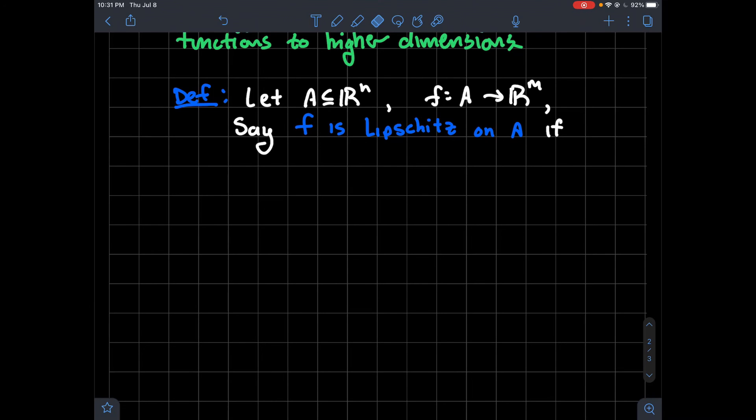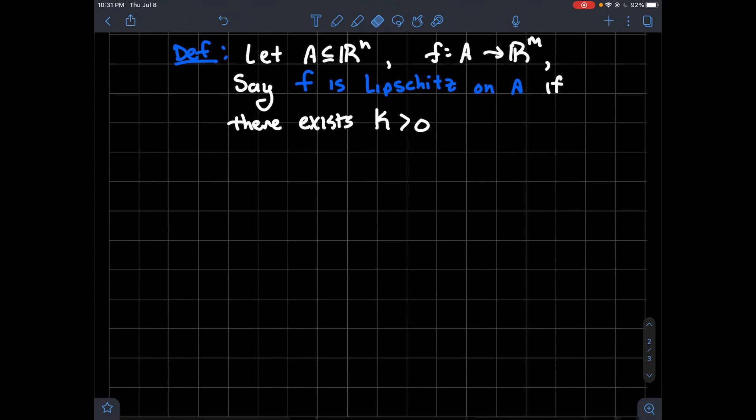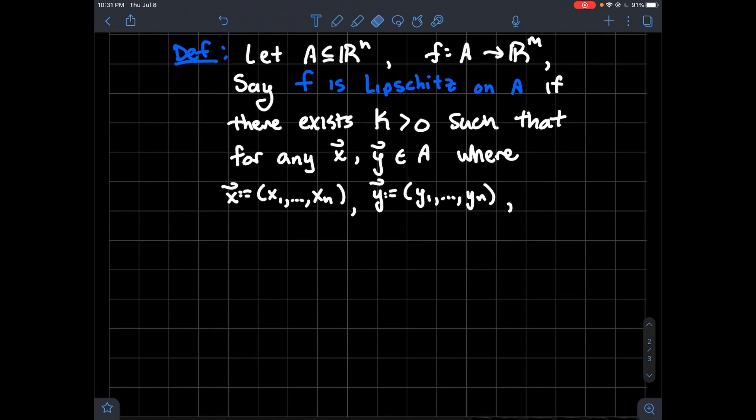We're going to say that f is Lipschitz on A if the following happens. There exists a constant k that's positive. That looks familiar. Such that if I take any two vectors x and y in A, that's supposed to be my attempt at a hat on an x to indicate it's a vector. The coordinates of x are x1 through xn, and the coordinates of y are y1 through yn.